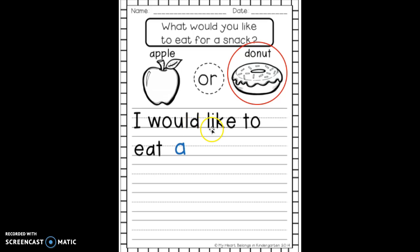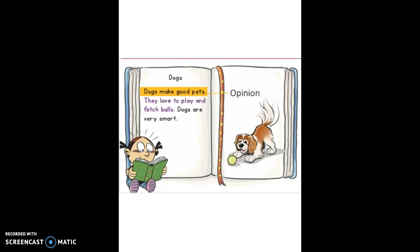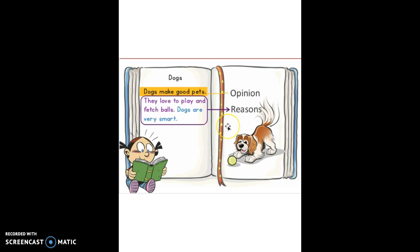I would like to eat a donut with icing. Now let's look back at our little book. 'Dogs make good pets. They love to play and fetch balls. Dogs are very smart.' The second two sentences were reasons why they thought dogs made good pets — that they love to play and fetch balls, and dogs are very smart.